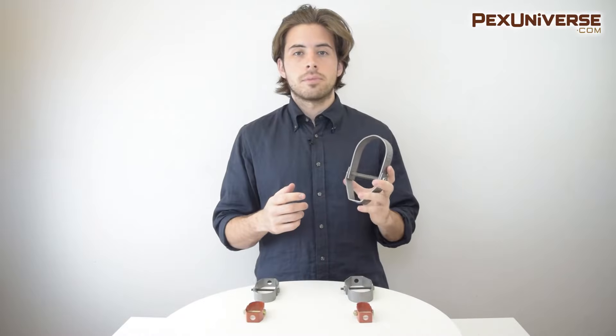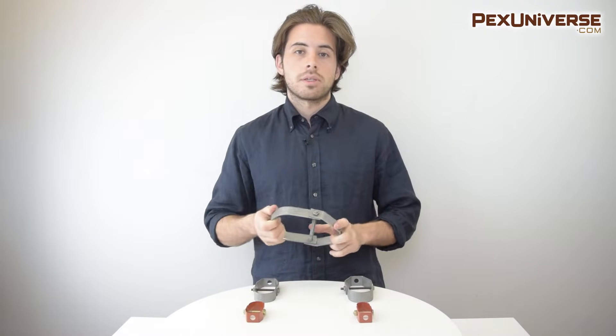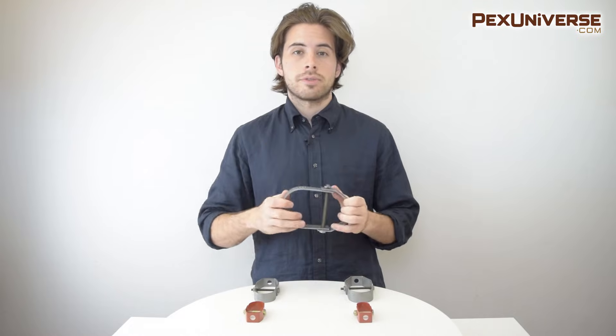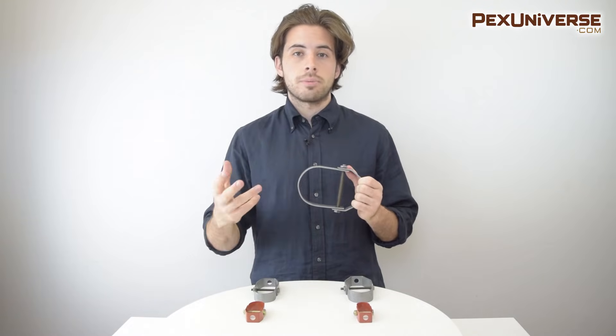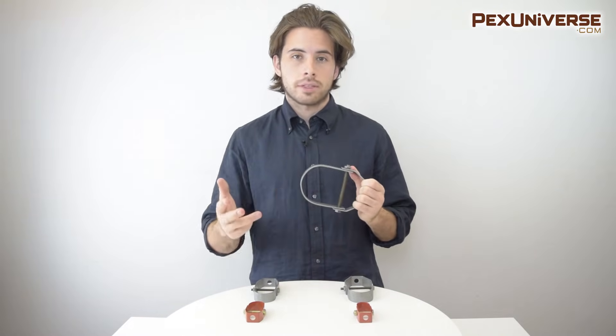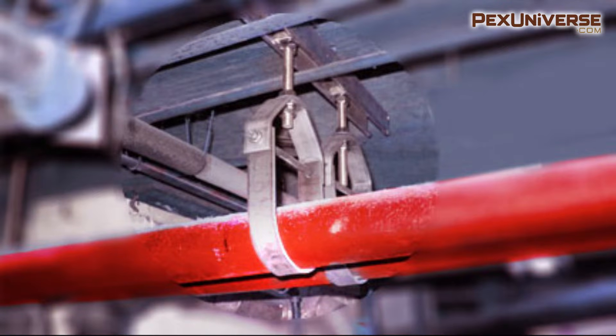These also allow for lateral movement and some degree of adjustment, so these are the number one choice for supporting pipes where sloping the pipes is an important factor. A clevis hanger requires a proper length threaded rod and a means to attach it to a ceiling or beam like in this picture.